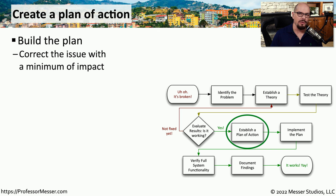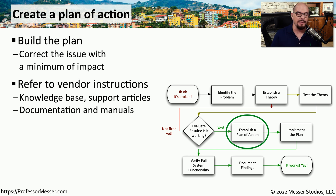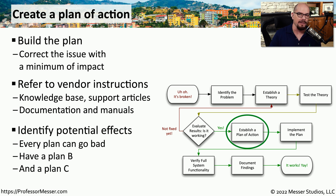We've confirmed in our lab that one of those troubleshooting steps resolves the issue. Now we need a plan for implementing that fix in the actual production environment — one that not only incorporates the change we want to make, but also allows us to revert back if we run into problems. We might look at documentation from the operating system or application vendor for their suggestions, then create our own plan. We'll need a primary plan A, alternate plans if problems arise during implementation, and always a rollback plan if something completely unexpected happens.